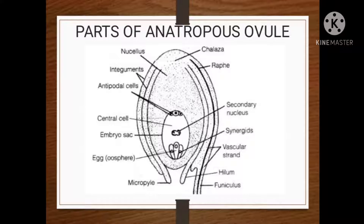The stalk of the ovule is called the funicle or funiculus. It may be long, short, or absent. The ovule with funicle is called a funiculated or stalked ovule; without funicle, it is called a sessile ovule. The point of attachment of funicle with the body of ovule is called the hilum. Funicle attaches ovule to the ovary wall by placenta. In the inverted ovule, the funicle remains attached beyond the hilum forming a ridge called the raphe, which persists even in mature seeds. This Anatropous ovule has vascular strands that supply nutrition to the body of the ovule.